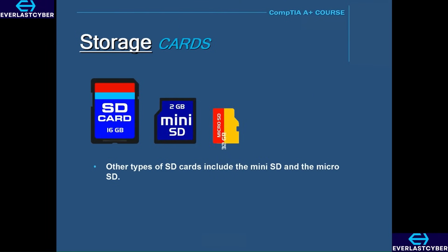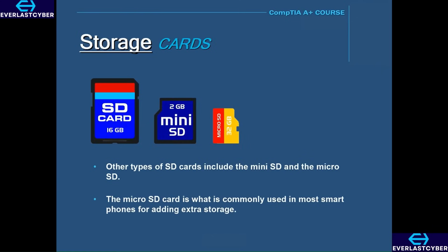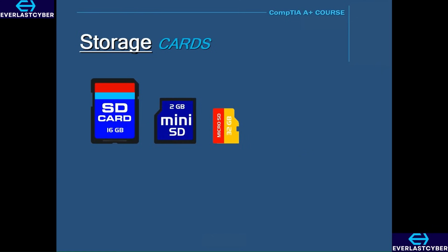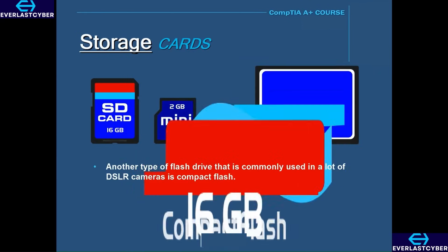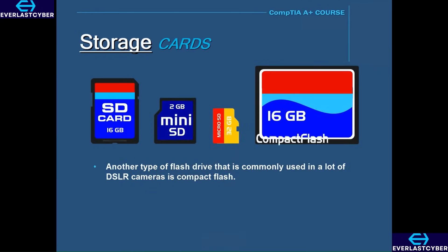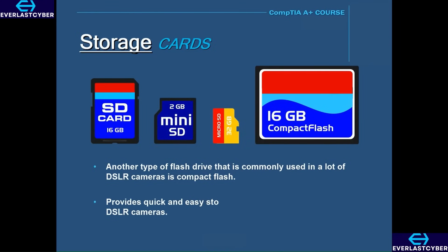While the standard SD card is used for storage in a lot of digital cameras, the micro SD card is what's commonly used in smartphones for adding extra storage. Another type of flash drive commonly used in a lot of DSLR cameras is compact flash. Compact flash cards provide quick and easy storage for pictures and videos in DSLR cameras, and they can be easily transferred to a computer by using a card reader.